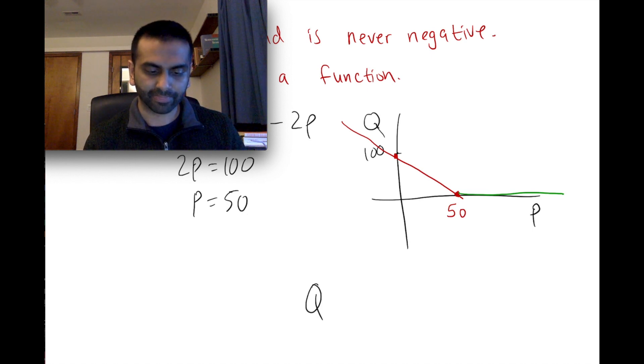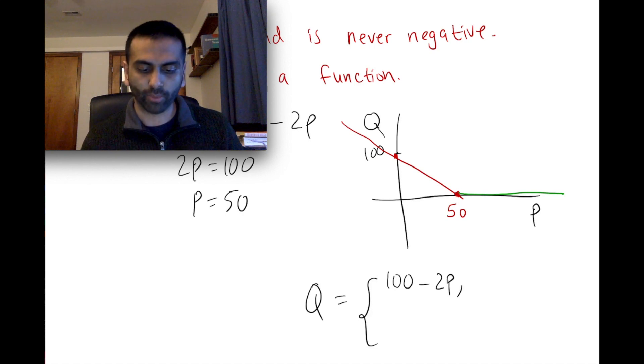...this q equals, it's equal to that line, the same equation, 100 minus 2p, specifically when p is less than 50. Less than, or you could even say equal to 50. But the quantity is literally just 0, so the domain of p is greater than 50.